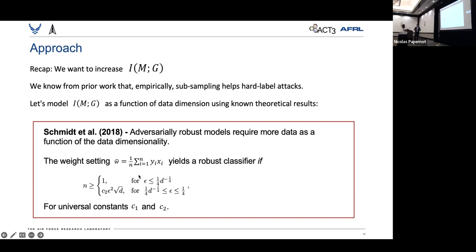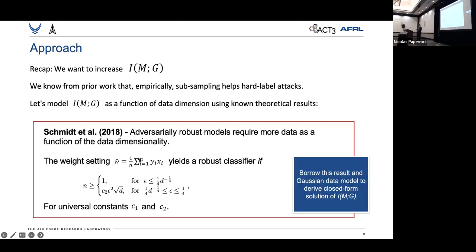So they had a nice closed-form solution that says that adversarially robust models require more data as a function of the data dimensionality. And so they have a nice data model and definition for a robust classifier that we borrow. And this is what we're going to use to derive a closed-form solution for the mutual information between manifold and clean gradients.